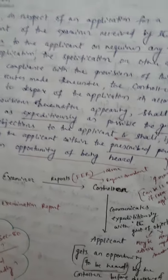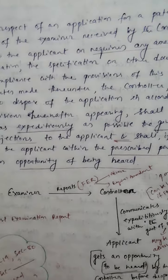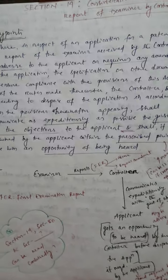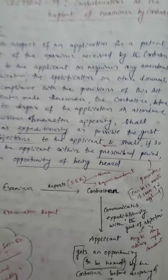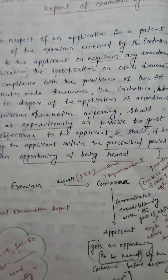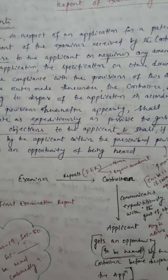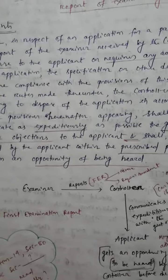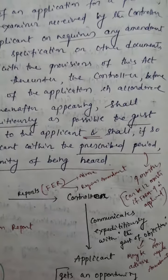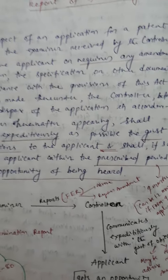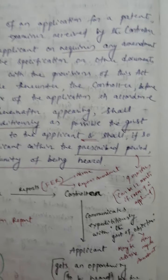This is a lengthy subsection, difficult to understand for the first two or three readings, but it can be explained in a simpler way. The examiner gives a report to the controller, and here this report is known as FER, or the First Examination Report, which may be adverse for the applicant or may require some kind of amendments.